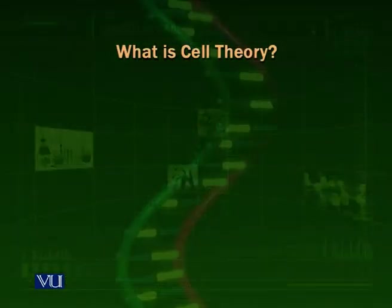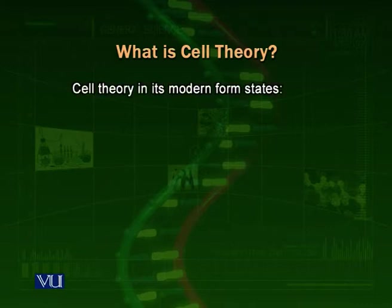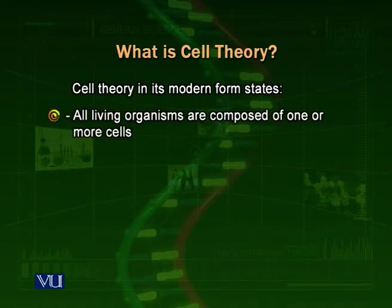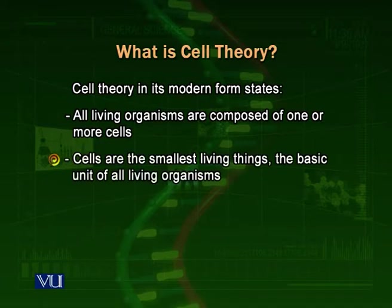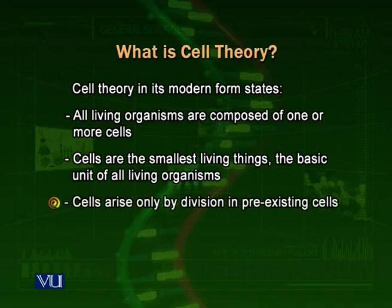Today we are going to talk about the cell theory and the cellular components. Cell theory states that all living organisms are made up of one or more different types of cells. Second, cells are the basic unit of life. Third, all cells arise from pre-existing cells — that is, all newer cells are formed by divisions in the older cells.